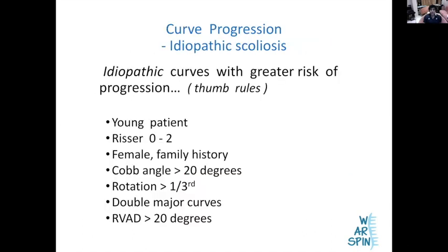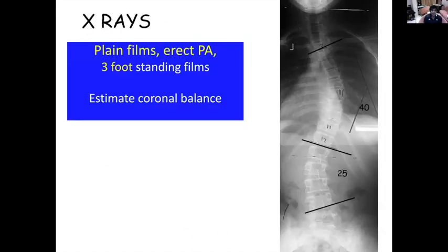Which curves are likely to progress? Red flags include a younger patient, a Risser sign of 0 to 2, a male patient, a family history, a higher Cobb angle, more rotation, and double major curves — all are known to progress faster.